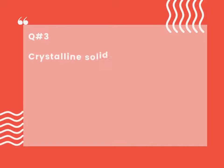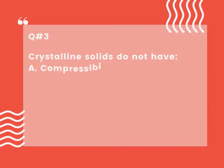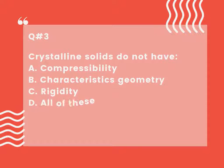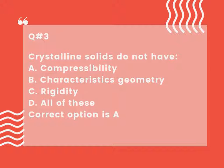Question number 3. Crystalline solids do not have: A. Compressibility. B. Characteristic geometry. C. Rigidity. D. All of these. Correct option is A.